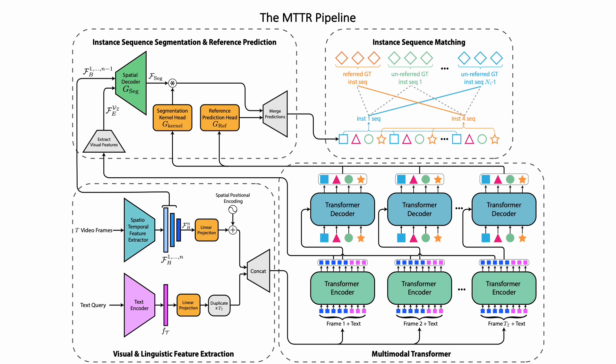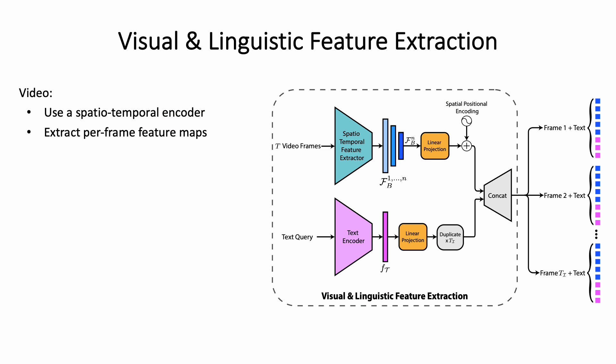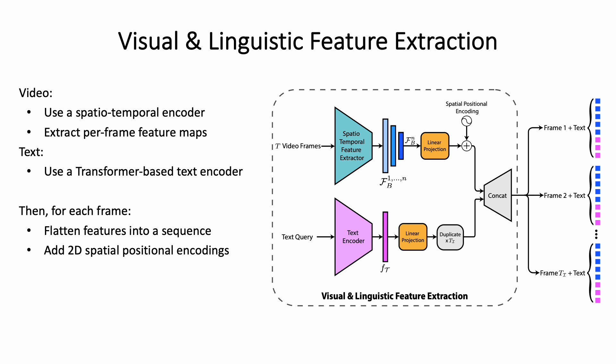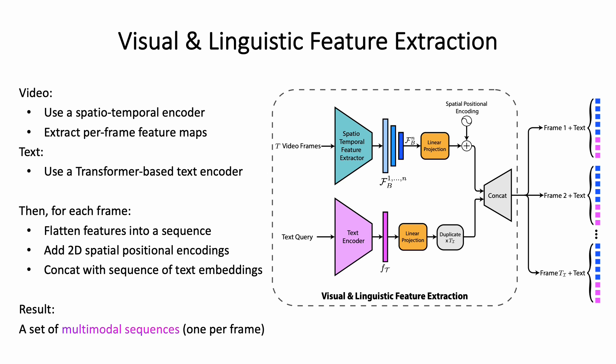MTTR's pipeline consists of four main steps. In the first step, we extract visual and linguistic features from the video and text. For the video, we use a spatiotemporal feature encoder. This encoder outputs per-frame feature maps, which contain both appearance characteristics and action semantics. Similarly, a transformer-based text encoder is used to extract linguistic representations from the text. Then, features of each frame are flattened, summed with two-dimensional positional encodings, and concatenated with the text embeddings. This results in a set of multimodal sequences, one per frame.